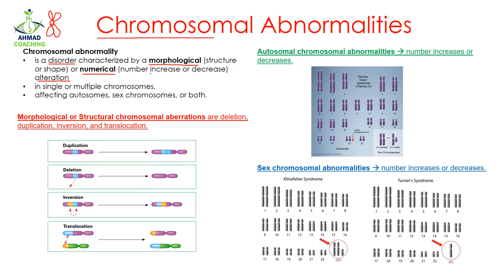Numerical means the number of chromosomes — it may increase or it may decrease. So any change in the structure or in the number of chromosomes is known as a chromosomal abnormality. This change can occur in a single or in multiple chromosomes, and it can affect autosomes, sex chromosomes, or both.